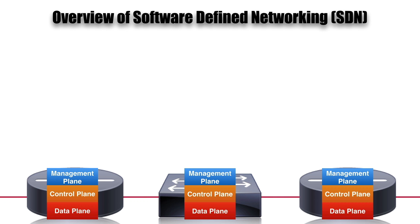Up at the control plane, this is where protocols operate. How did the CAM table get populated? How did the IP routing table get populated? Those operations happen at the control plane. On a router, we might have routing protocols like OSPF or EIGRP running at the control plane. On a switch, we might have Spanning Tree Protocol, STP, running at the control plane.